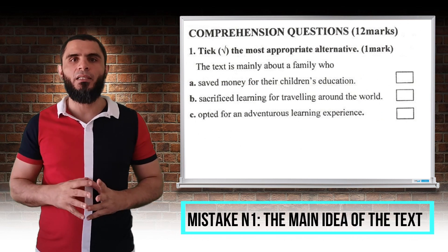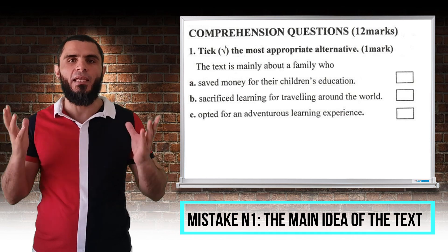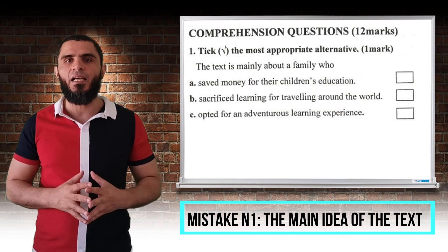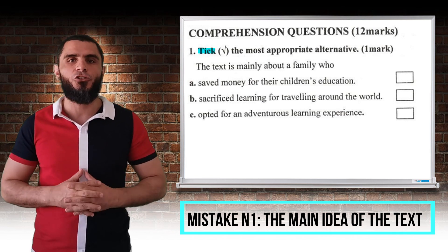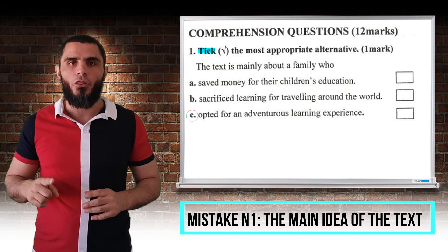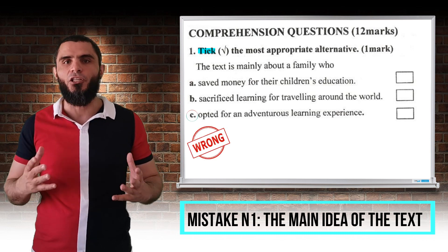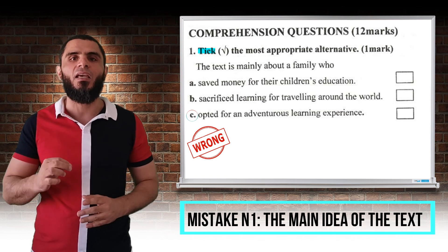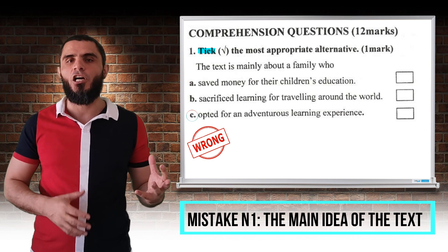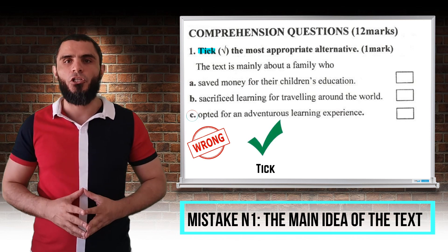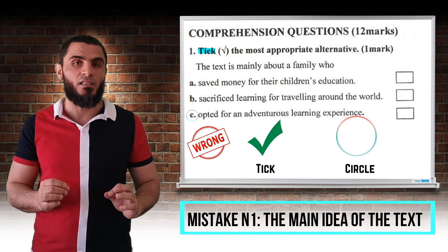Mistake number one: the main idea of the text. The first question can be about the main idea of the text. Sometimes the question states that you should tick the right answer. However, some students circle the right alternative, and this is incorrect — you wouldn't get the mark even if the answer was right. Simply because tick is not circle, and circle is not tick. So you have to make sure what the question states.